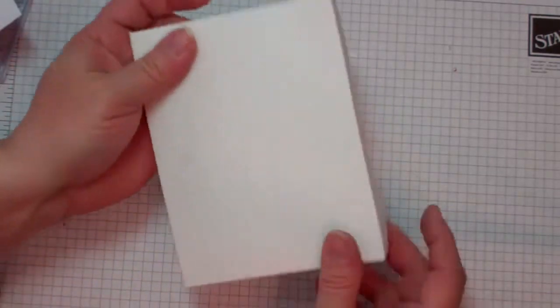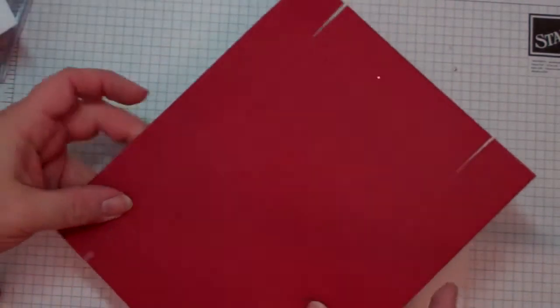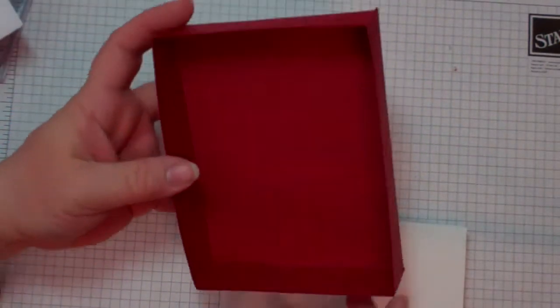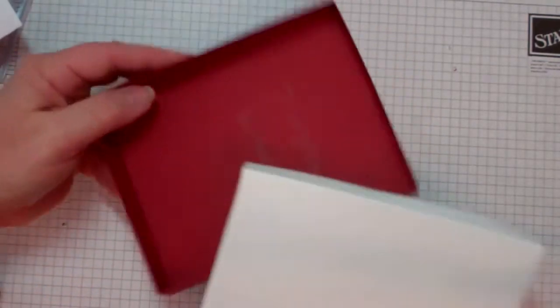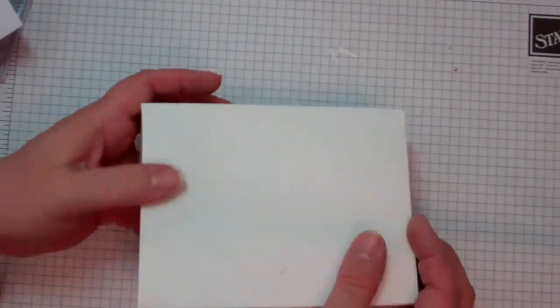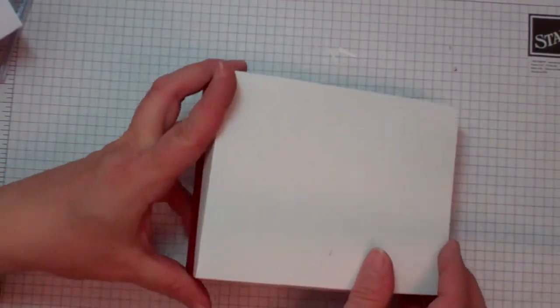Okay, and then that assembles the box top. So you'll do the same thing to this bottom and you'll end up with a base that looks like this. Okay, then you'll just put them together and you have your box.